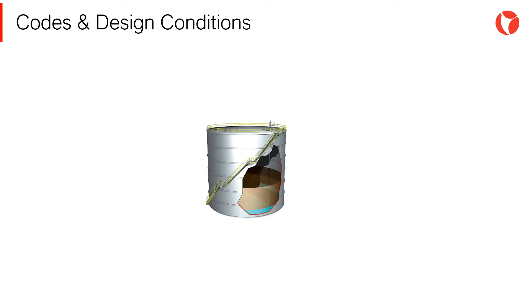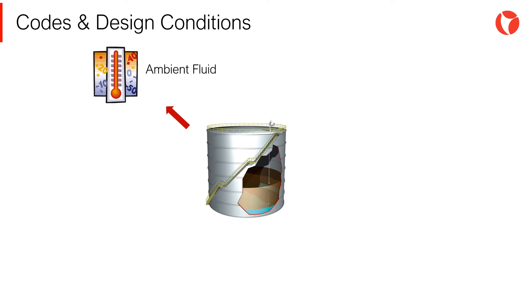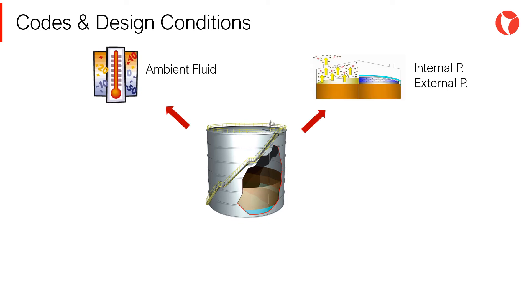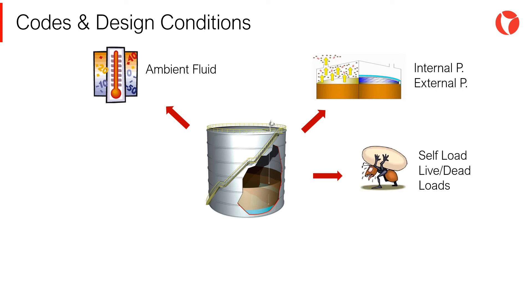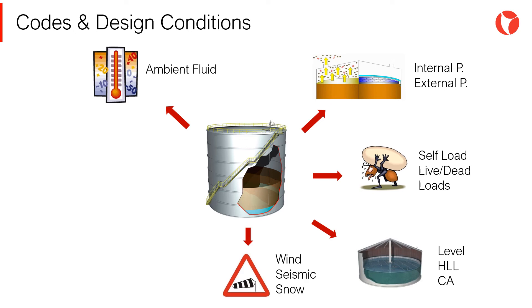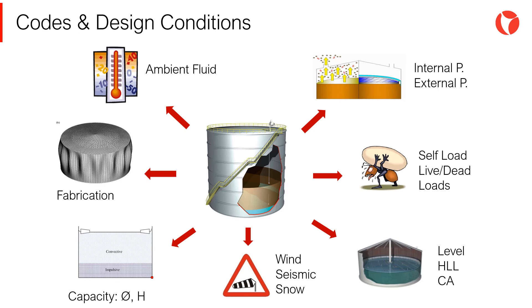Pressure and temperature are just two of the many design constraints that should be taken into account. Some of them are ambient temperature or fluid temperature, pressure requirements either internal or external, loading such as self-loads or dead loads, liquid level, corrosion allowance, external requirements and site conditions such as wind, seismic, or snow, and capacity, diameter, height, and fabrication requirements.